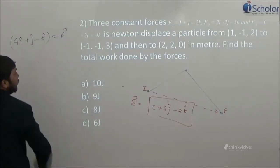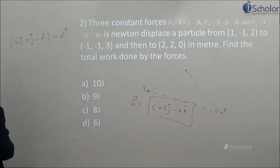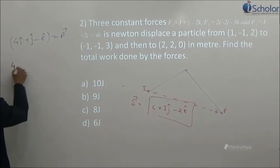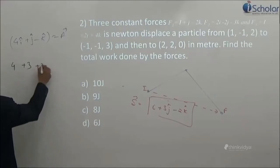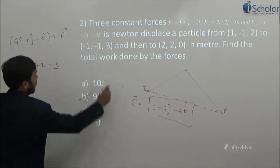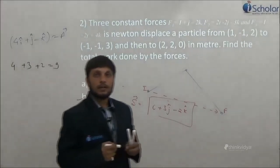What is work done? F dot S. When you will do the dot product, i i 4, j j 3, and k k minus minus plus 2. Answer is 9. Easy, so that's the work done.